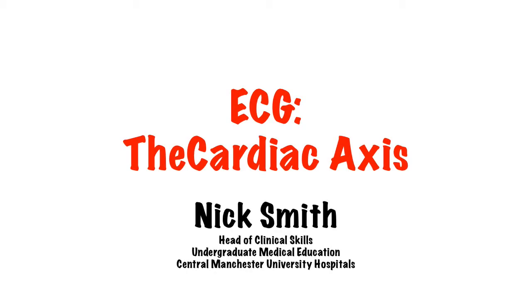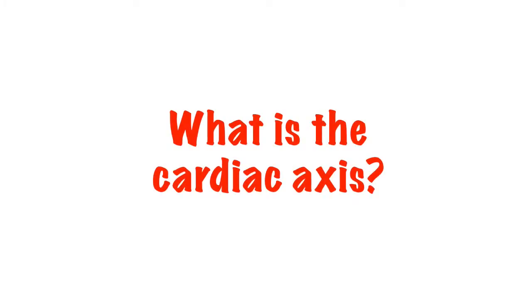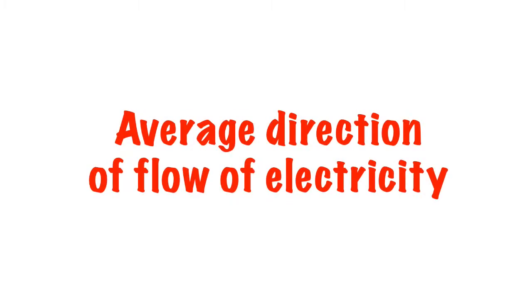Hi, my name is Nick and this five-minute talk is about the cardiac axis. What is the cardiac axis? It's the average direction of the flow of electricity, or depolarization, through the heart — the mean electrical vector.